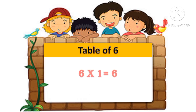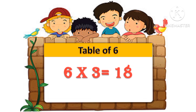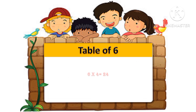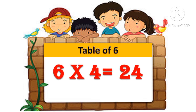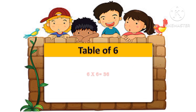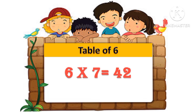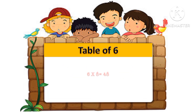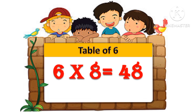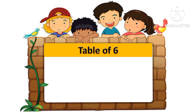Table of 6: 6 one's are 6, 6 two's are 12, 6 three's are 18, 6 four's are 24, 6 five's are 30, 6 six's are 36, 6 seven's are 42, 6 eight's are 48, 6 nine's are 54, 6 ten's are 60.